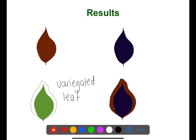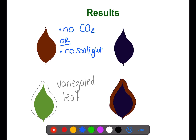Here we can see some leaves that have been tested. In this first example, we have a brown leaf after testing with iodine. Since the iodine has not changed colour, we can conclude that there was either no carbon dioxide present or no sunlight. On the other hand, this leaf here, which is a dark blue colour, tells us that carbon dioxide and sunlight were both present.